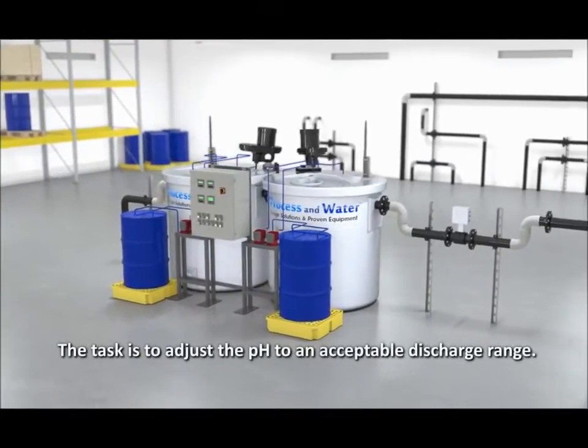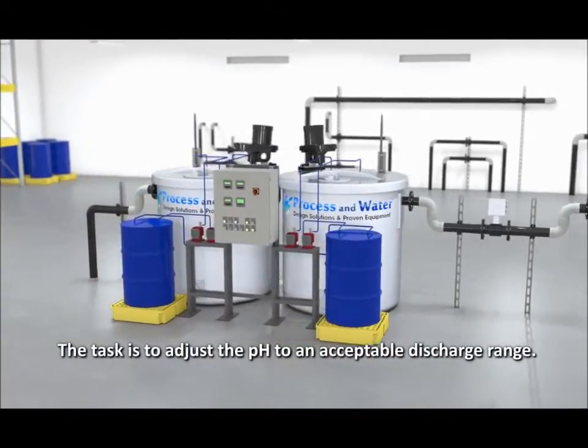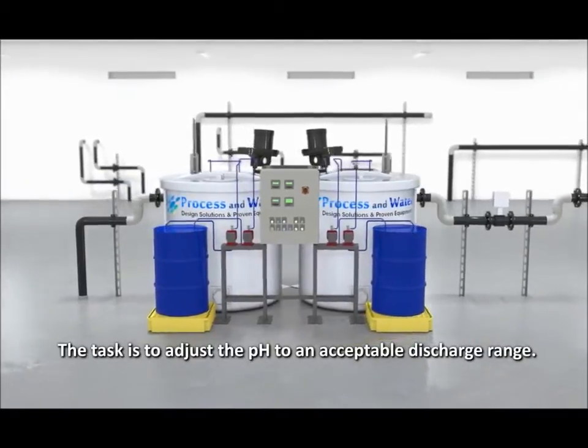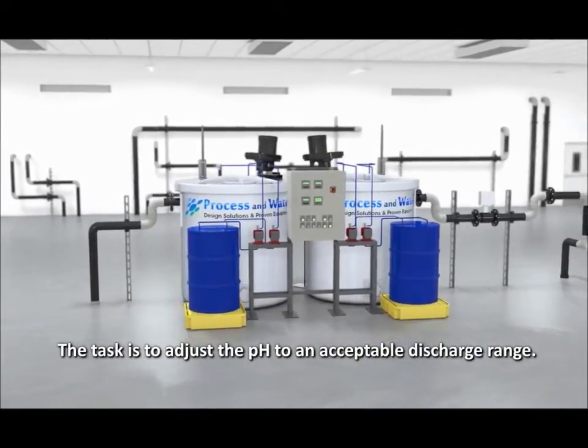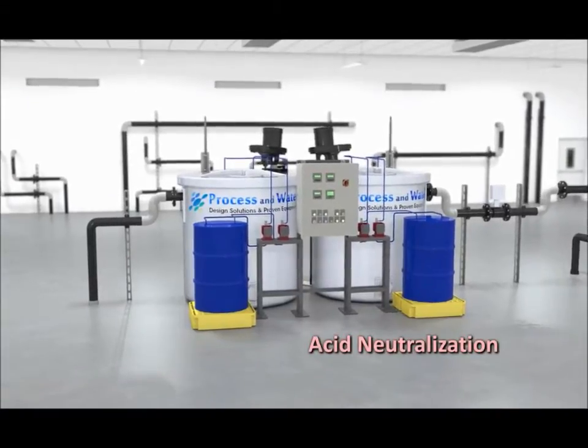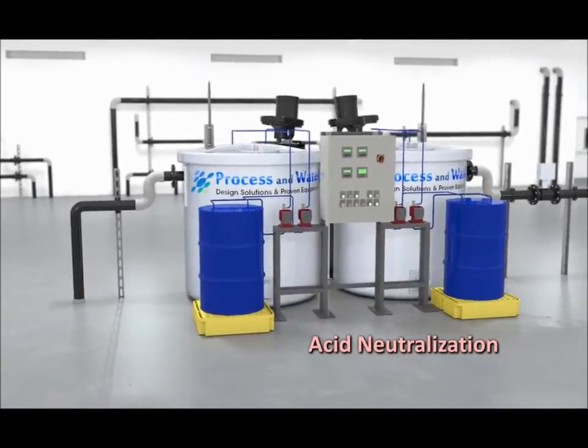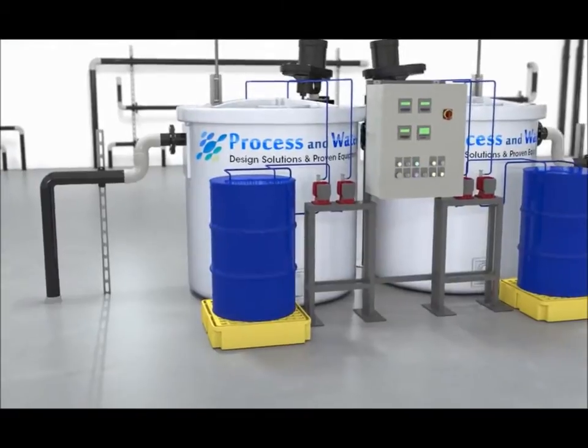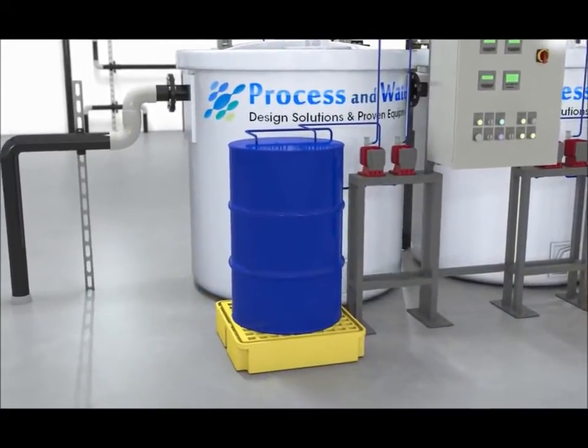The task of any pH adjustment system is to adjust the pH of the process stream into the defined acceptable discharge range. In the case of an acid neutralization, caustic, NaOH, is added to the affluent stream to neutralize the pH of the solution.